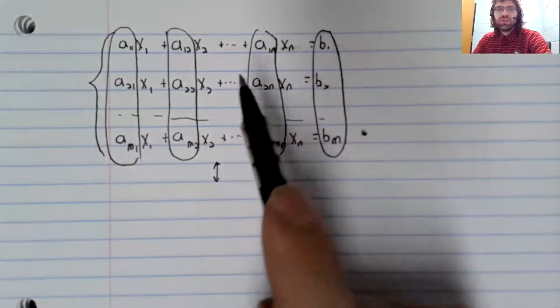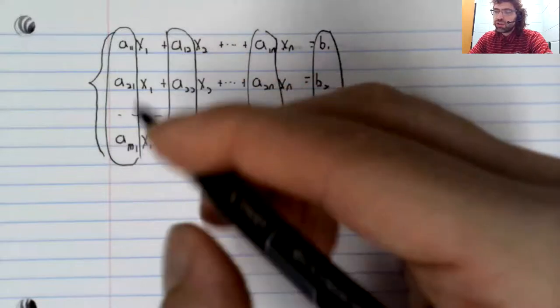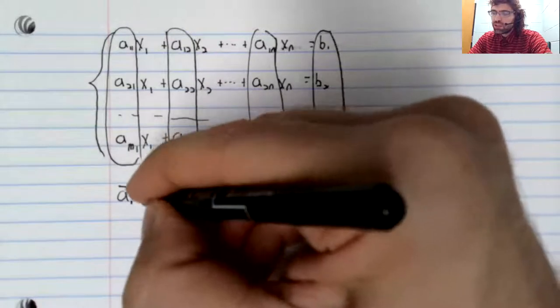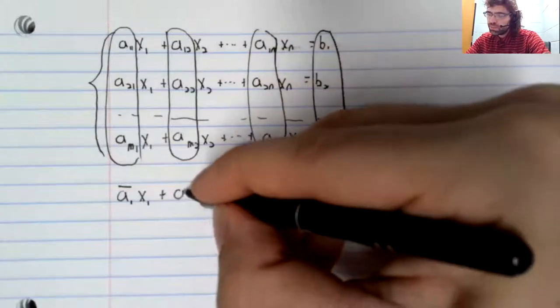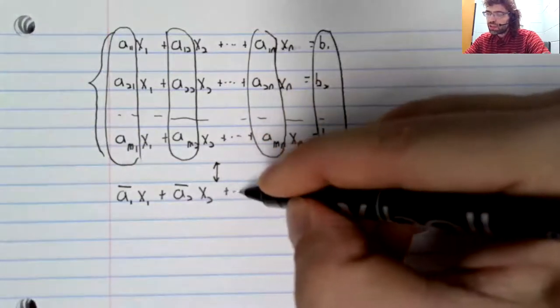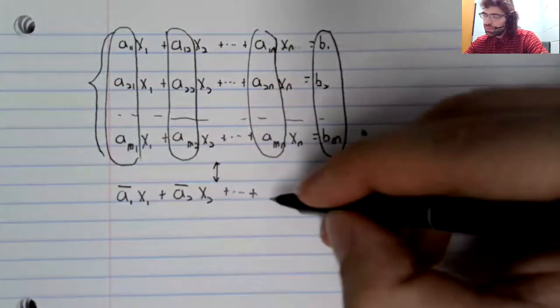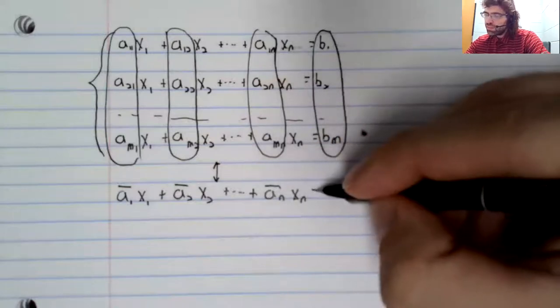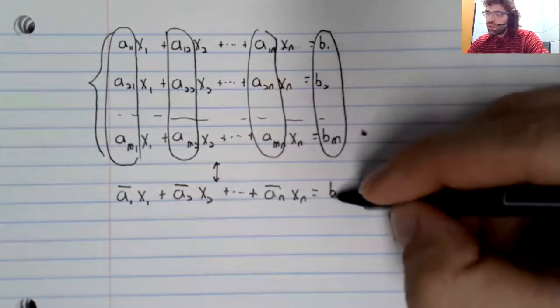then this system of linear equations is the same as this vector, let's call it a sub 1 times x1 plus this vector, call it a sub 2 times x2, up to this vector, call it a sub n times xn equals this vector b.